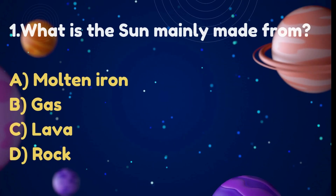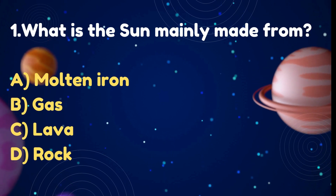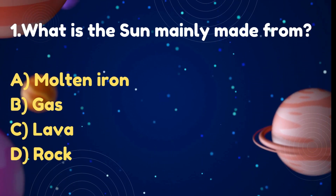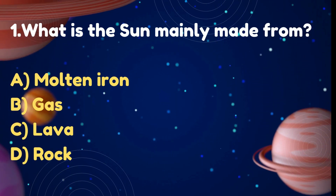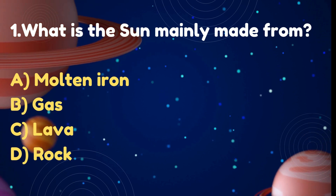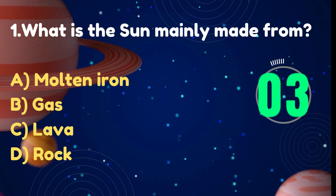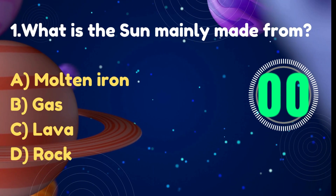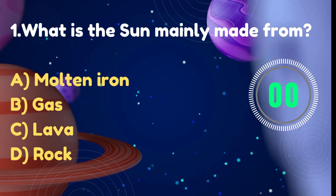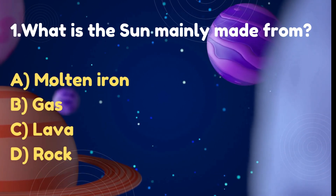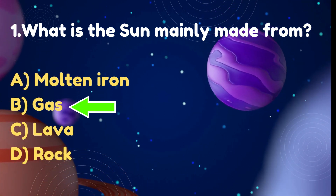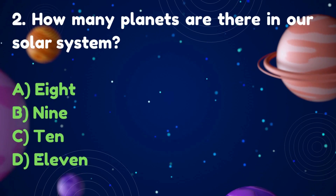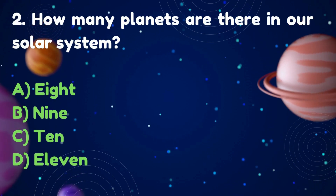What is the sun mainly made from? Options: Molten iron, Gas, Lava, Rock. Answer: Gas.